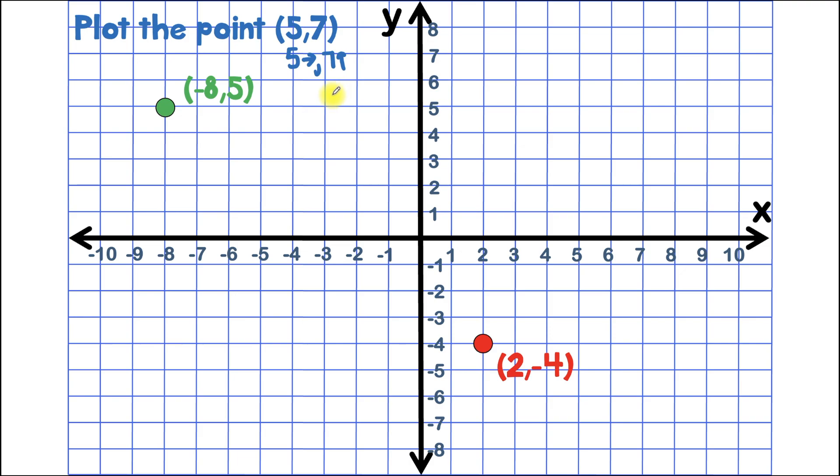Now let's follow that plot plan. We'll start at the origin. Go 5 units to the right. 1, 2, 3, 4, 5. And then from here, we'll use our y coordinate, and that means we're going to go up 7. 1, 2, 3, 4, 5, 6, 7.